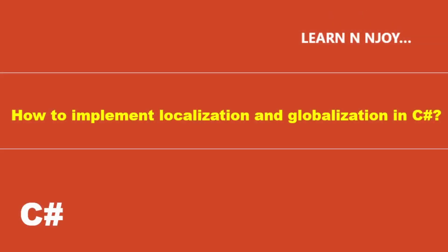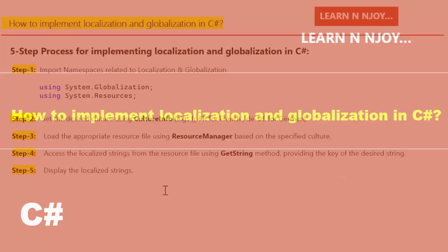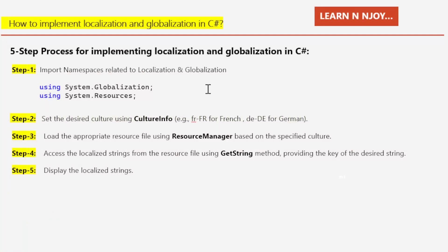Here is the five-step process for implementing localization and globalization in C#. Step one: import namespaces related to localization and globalization — 'using System.Globalization' and 'using System.Resources'. We need to import these two namespaces at the top of the program. Step two: set the desired culture using CultureInfo, for example 'fr-FR' for French or 'de-DE' for German.